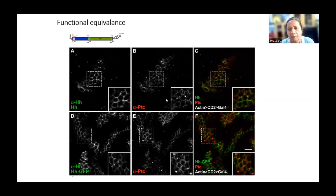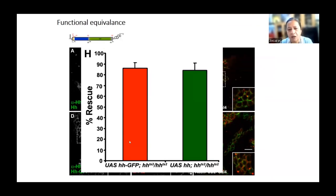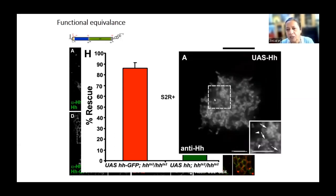Using cell imaging, the highly expressed forms of hedgehog in the wing imaginal disc could be followed with the fluorescent tag. One target gene, patched — one cell diameter away — was also followed using two different colors: hedgehog shown in green and patched in red. Neha and Debanjan verified that functional equivalence is retained: the GFP-tagged protein performs the same way, is expressed in equal quantities, and is able to form both visible and nano clusters.